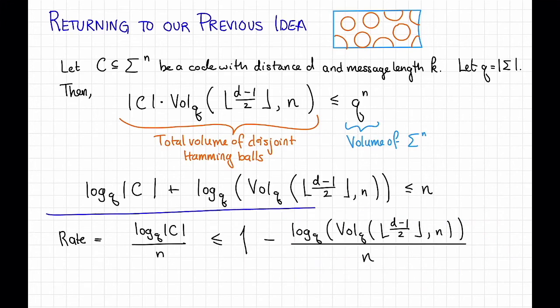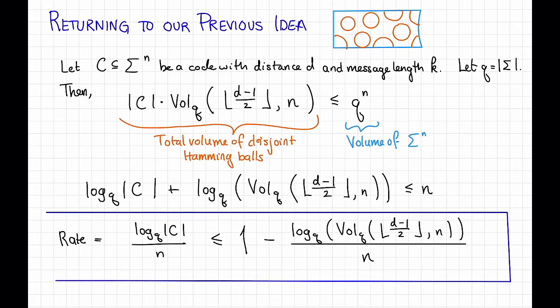So this here gives us a bound on the rate in terms of the distance so the distance shows up here and here's the rate and this is called the Hamming bound.